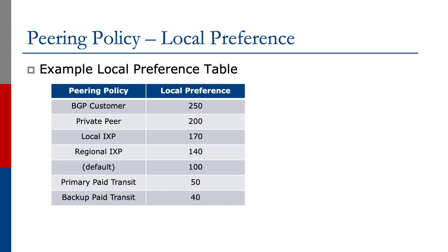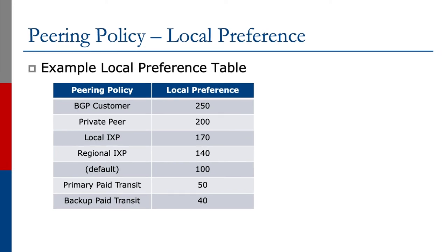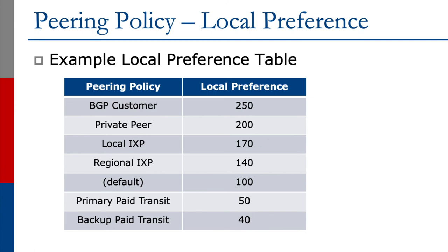The slide shows a typical set of local preferences that an operator might be using. For a BGP customer, we would set local pref 250. For a private peer, we would set local pref 200. The local exchange point, we would probably set local pref 170. The regional exchange point, we would set local pref 140. The default local preference is 100. And then we would have a primary paid transit provider at maybe local pref 50, and a backup paid transit, if we have a second transit provider, at local pref 40.